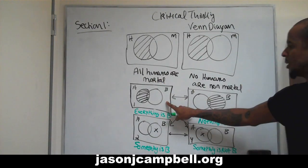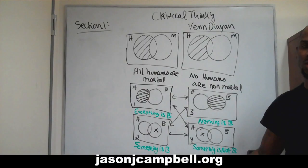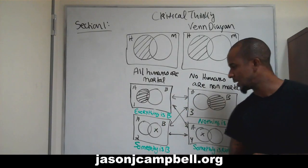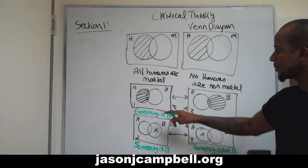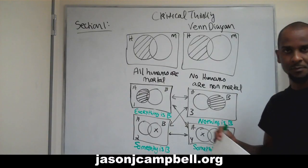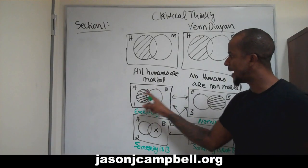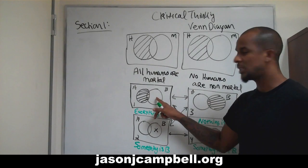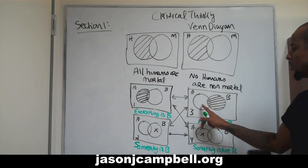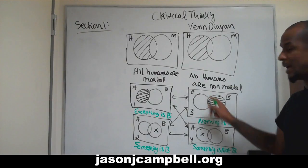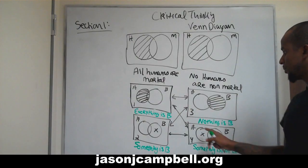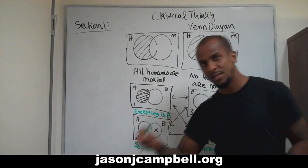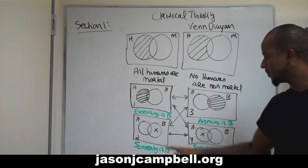So, one through four all with respect to B, and there are many different ways you can word this. In example one, 'everything is B' should make sense because we're saying the entire circle A is shaded in — if it's shaded in, it means it's empty — so all of A is empty, therefore the only thing that exists is B. In example two, all of B is shaded in including the overlap with A, there is no B, so we make the claim 'nothing is B.' In example three, there's an X there which represents that something exists in B — there is something that exists in B, so we say 'something is B.'